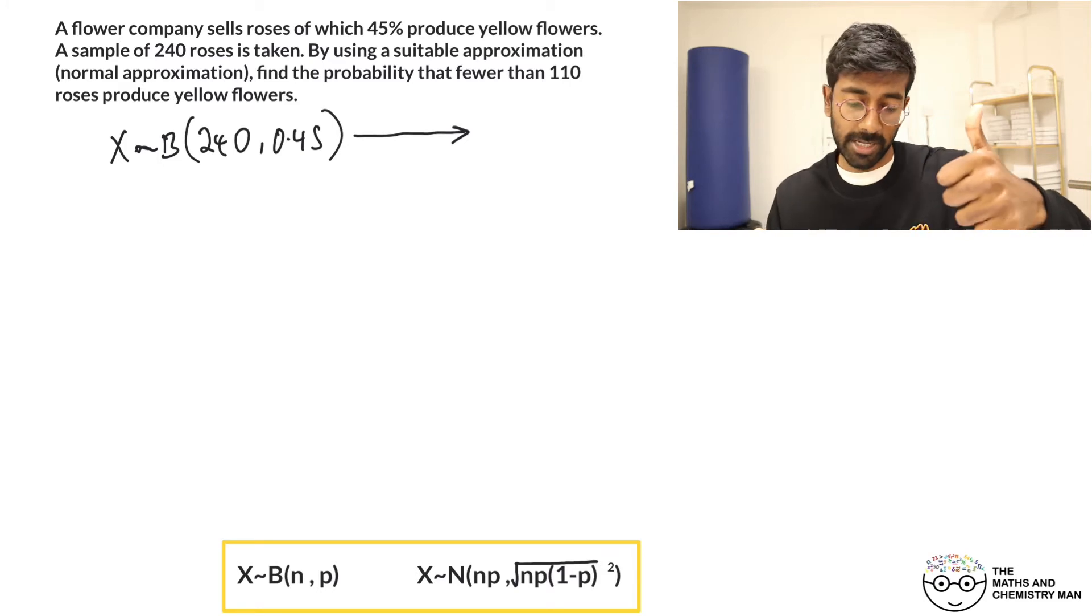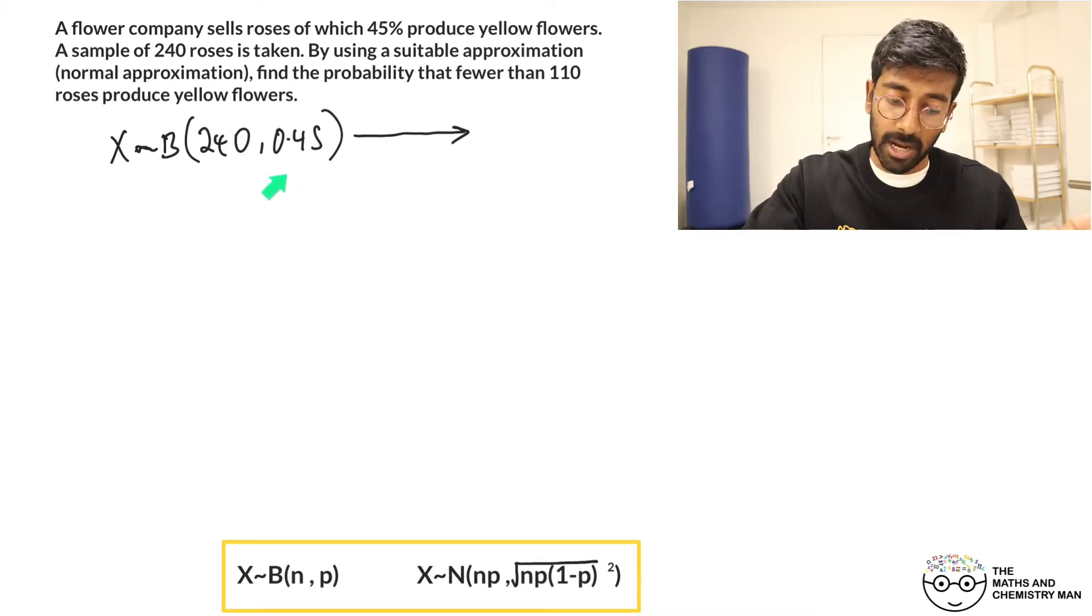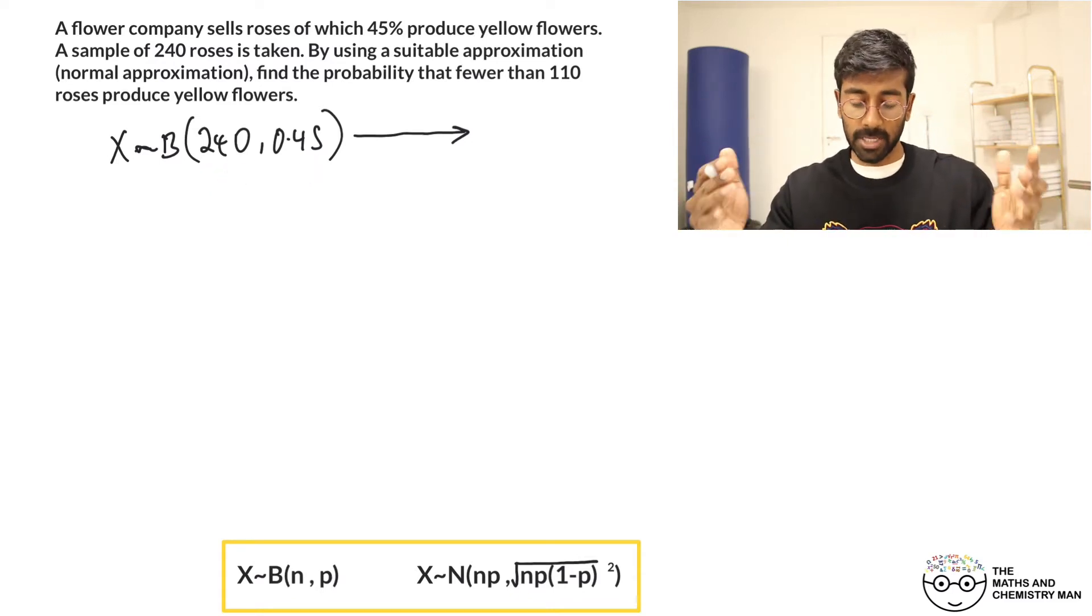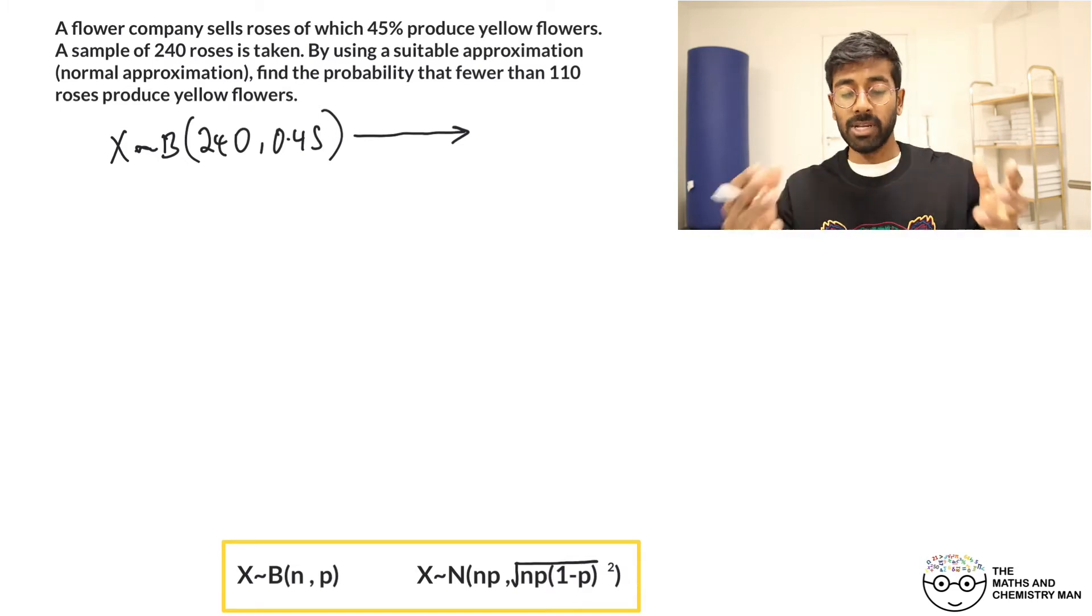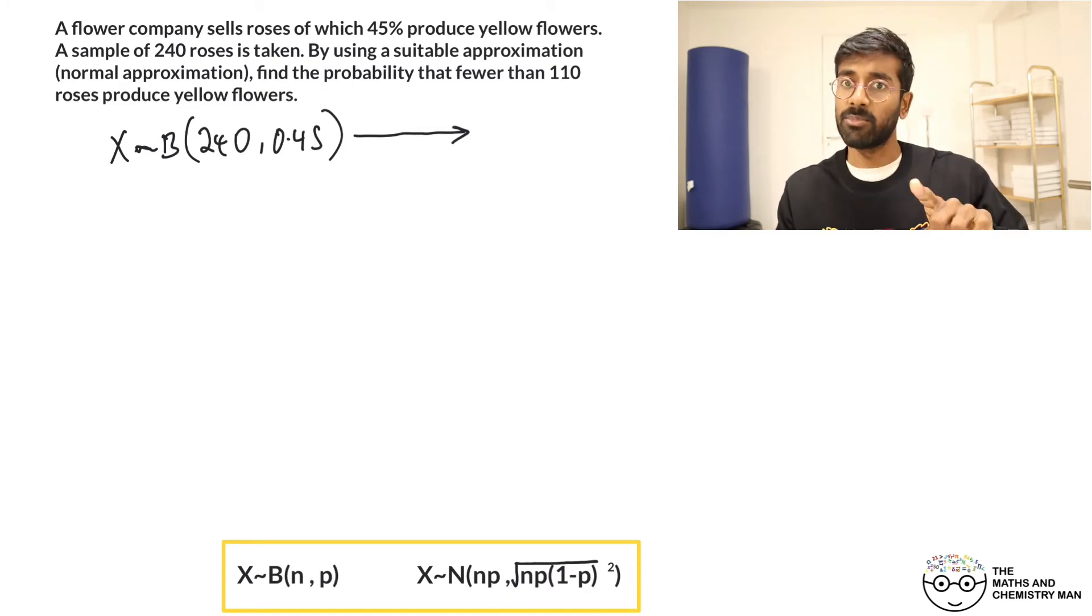Now when you approximate to a normal distribution, when do you do it? Well, you do it usually when n is large. That's the first thing, right? Usually when you've got over 50 things in your sample, that's when you want to be approximating to your normal distribution. And the other time is when the probability is quite close to 50% or 0.5. In our case we've got 0.45 and our value of n is massive, 240, that's way over 50. The reason we do that is because when you've got a really high number for n and you've got a probability close to 0.5, if you look at the distribution it's almost symmetrical, which is why we can approximate it to a normal distribution.